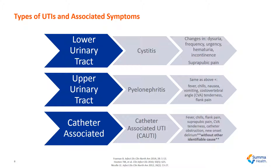If it is the upper urinary tract, this type of infection is called pyelonephritis. The symptoms are the same as above; however, now we have more systemic signs of infection, including fever, chills, nausea, vomiting, costovertebral angle tenderness, and flank pain, which can be found upon exam.